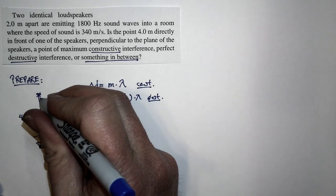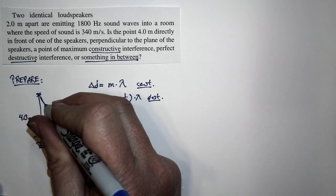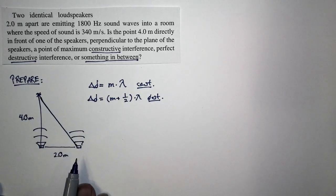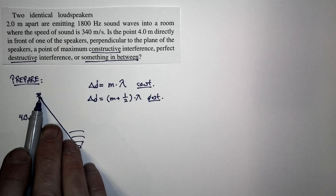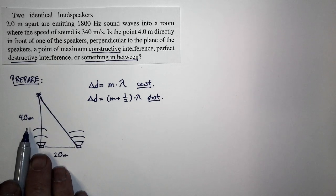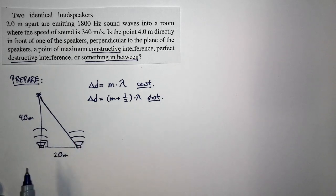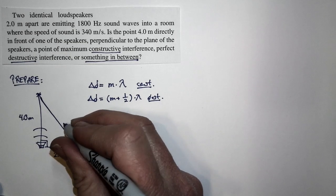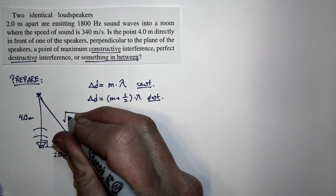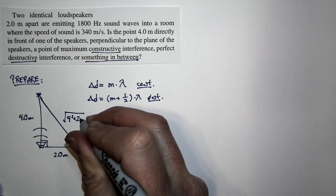To make sense of this, we need to figure out how far is it from this speaker to this point. From this speaker to that point is 4 meters. How about from this one? Well, this is a right triangle. This distance is 4 meters, this distance is 2 meters. So this distance is the square root of 4 squared plus 2 squared.